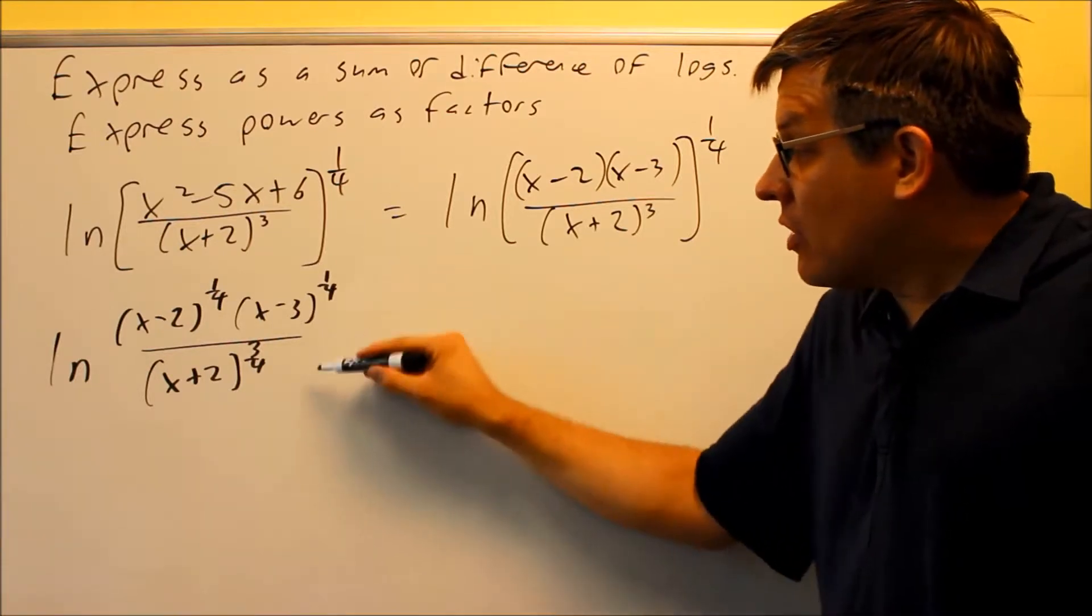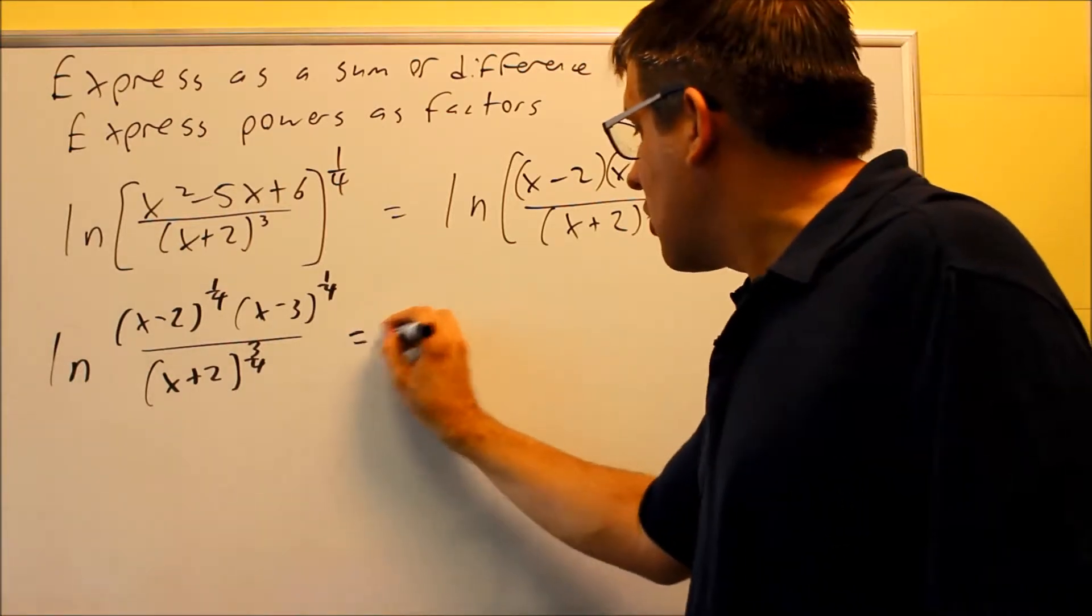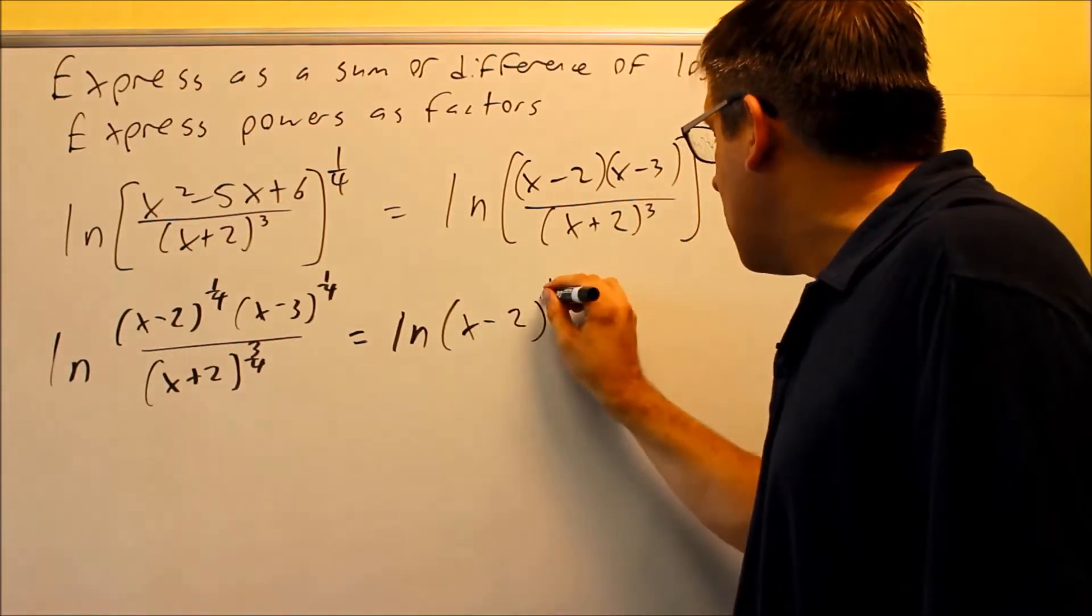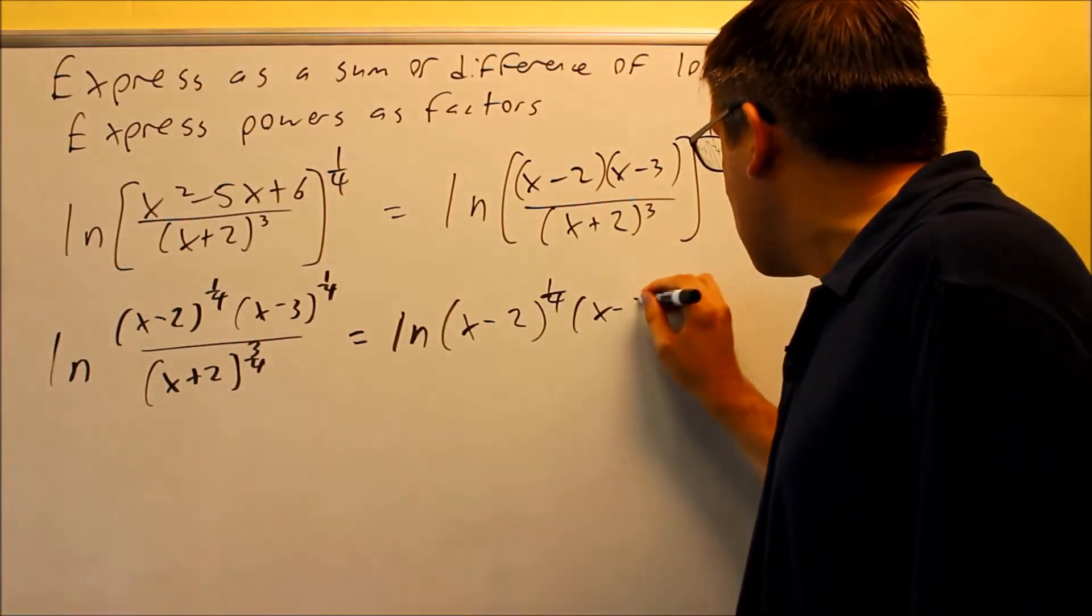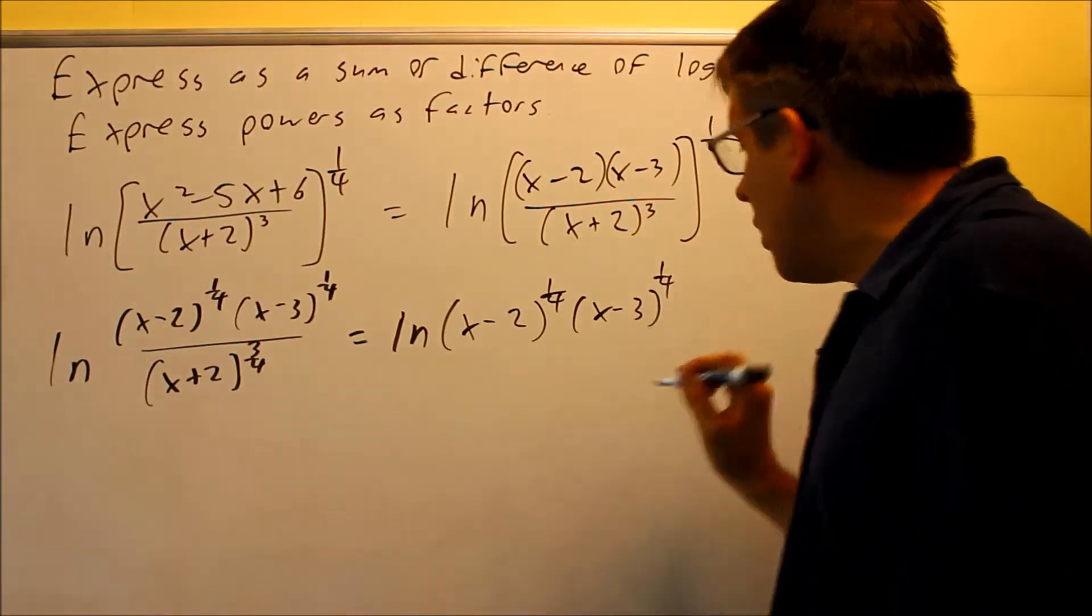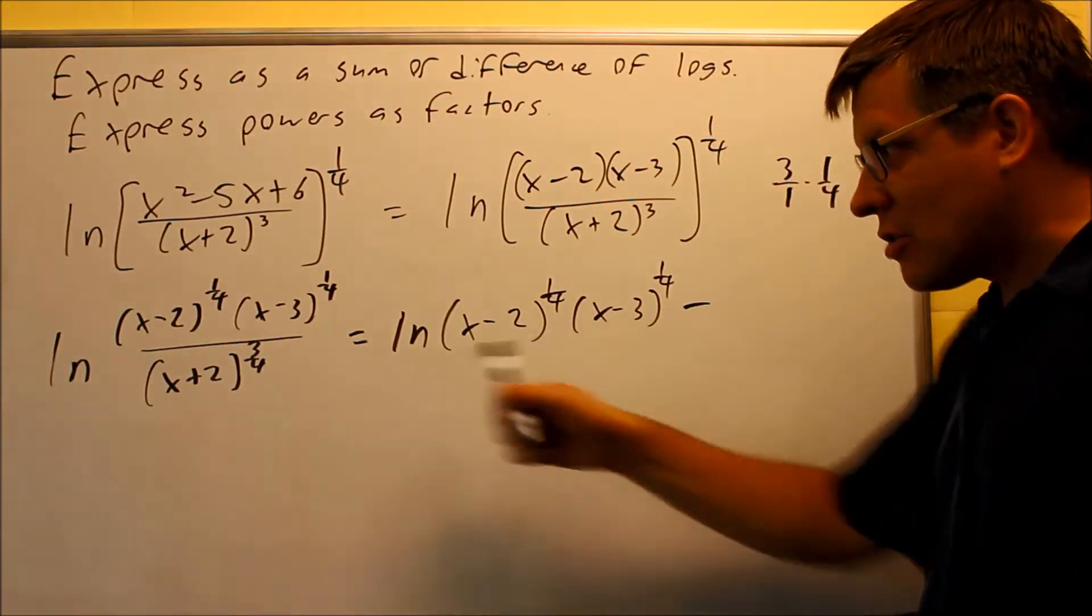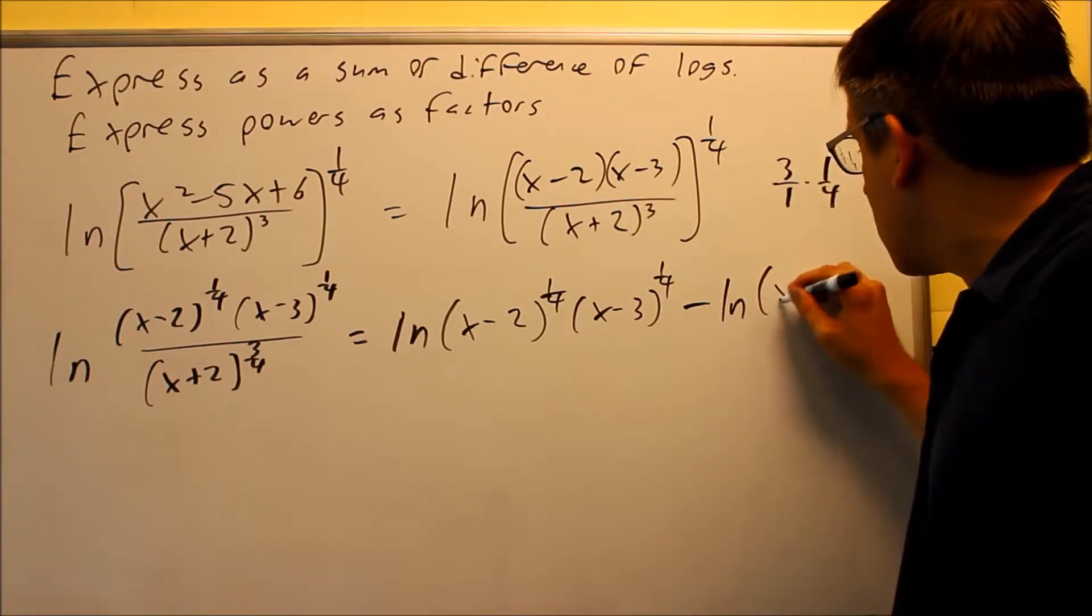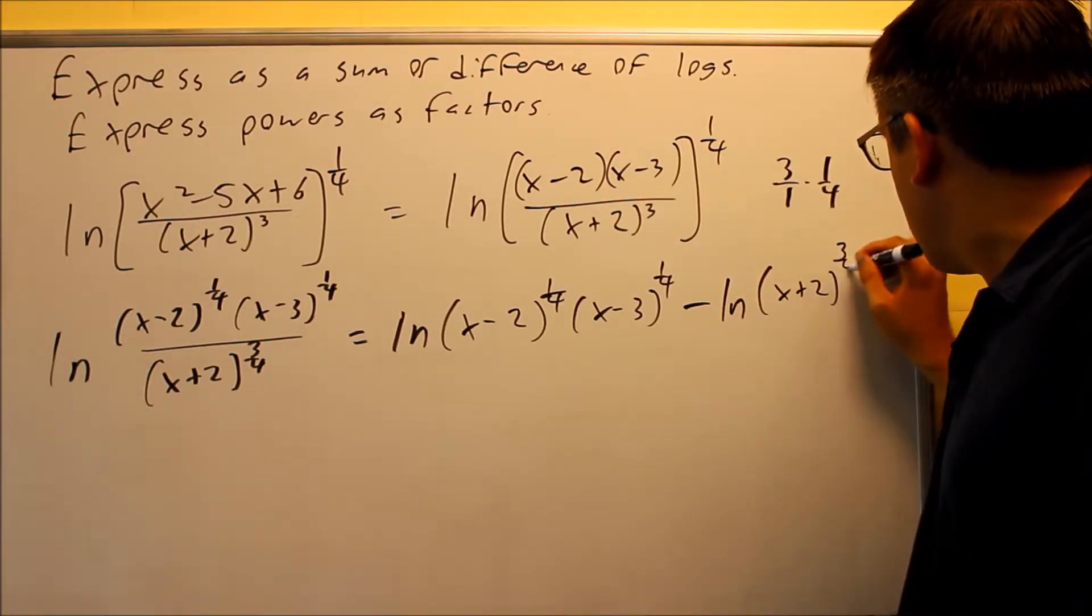So I have a division problem first. I'm going to start by separating the division. So I have x minus two to the one-fourth and then x minus three to the one-fourth here. I have that first part, minus, because we're using rule number seven, ln x plus two to the three-fourths.